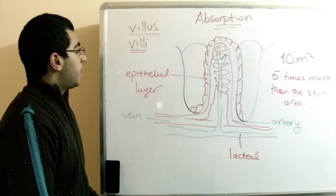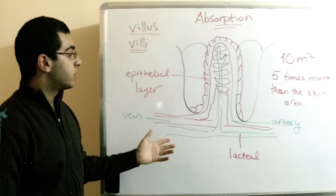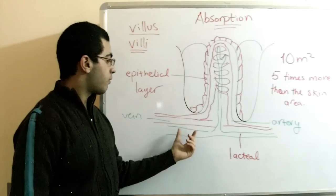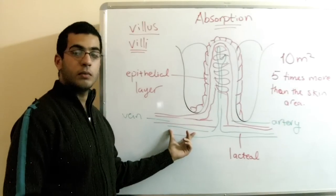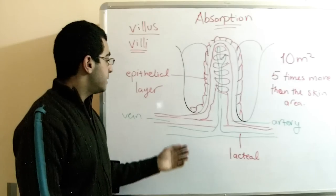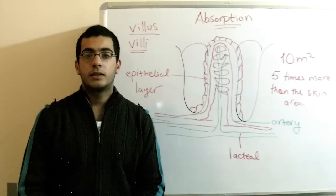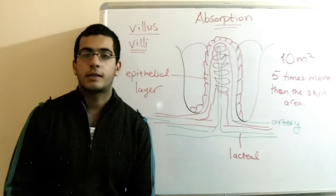And that was our lesson today. Next time we will talk about the route of the absorbed food, the route which moves through the lacteals - the lymphatic route - and the blood route that moves through the blood vessels. And until then, thank you for watching and see you next time.